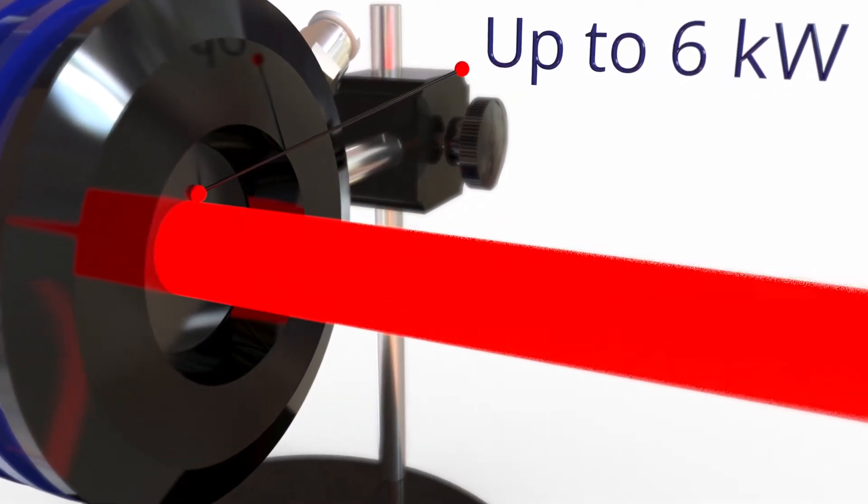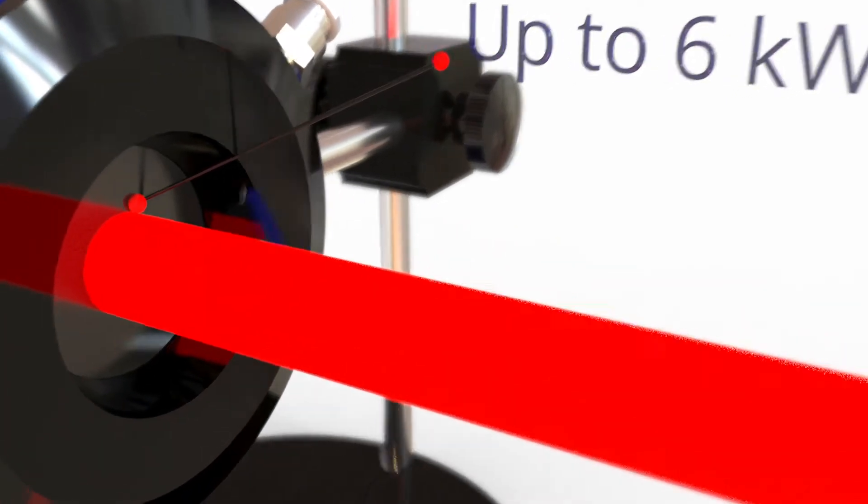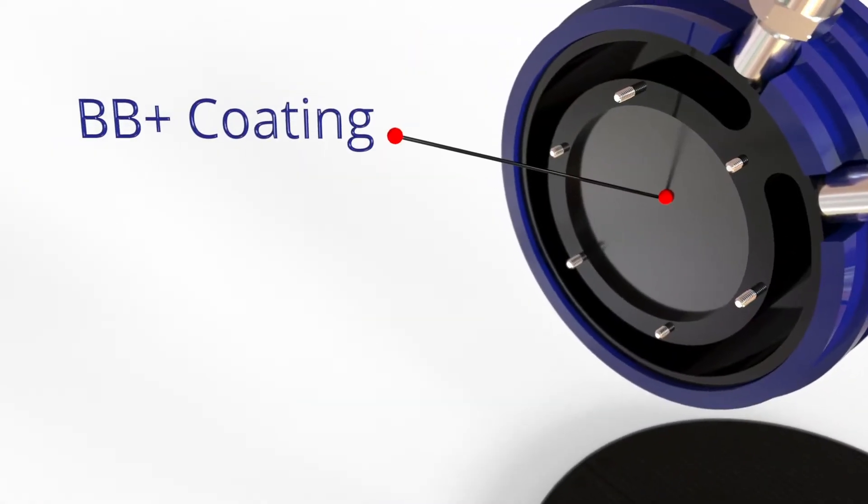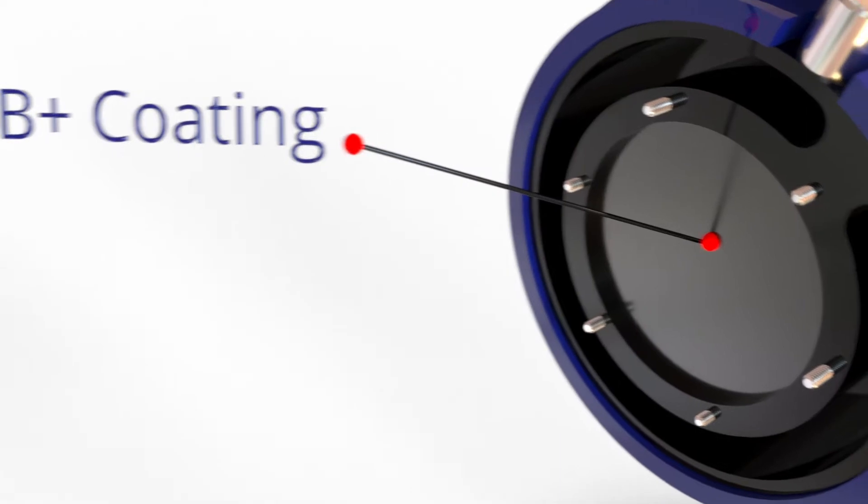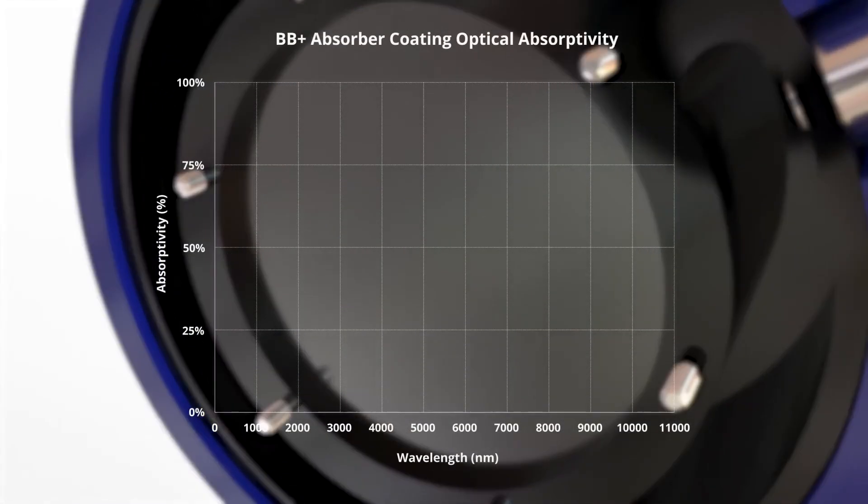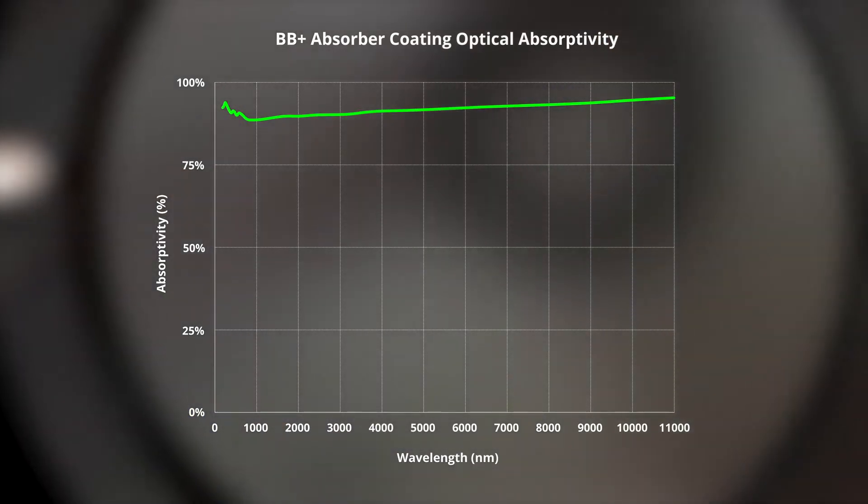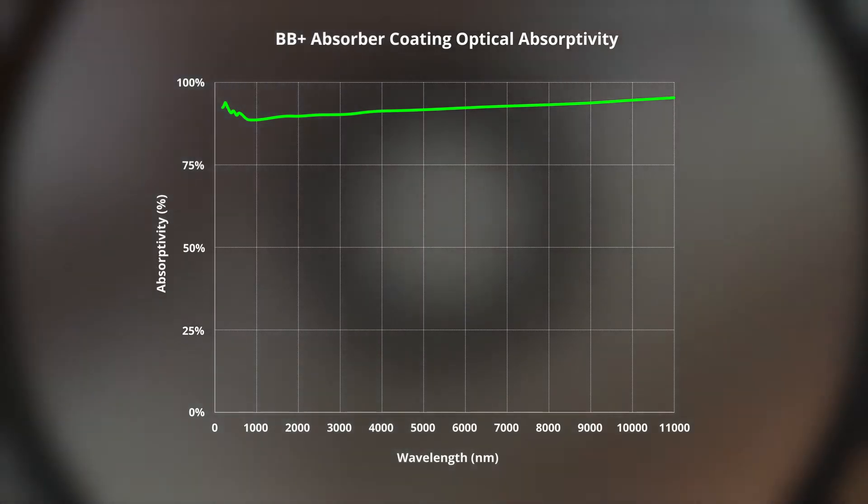These sensors are a great choice for laser manufacturers and industrial applications. They feature our state-of-the-art BB Plus coating, a spectrally flat coating from the ultraviolet to far-infrared wavelengths. It absorbs more than 90% of incident laser energy and is highly resistant to laser damage.